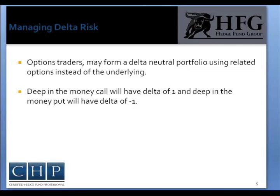A deep-in-the-money call will have a Delta of potentially one, which is almost 100 shares on one contract. The same can be said for deep-in-the-money puts, and hence the Deltas will cancel each other out. Given that Delta is a very important part of a strategy when purchasing or selling options, risk managers and portfolio managers should understand how the underlying market changes and what creates a Delta neutral strategy.